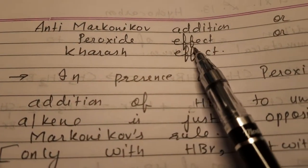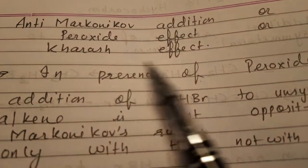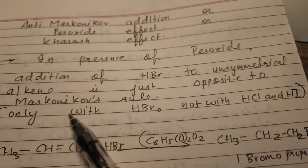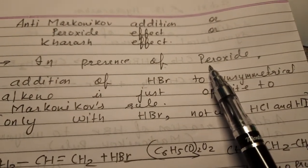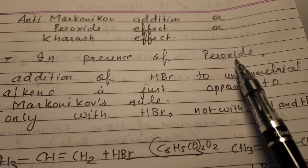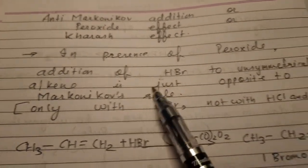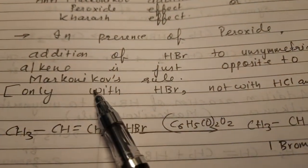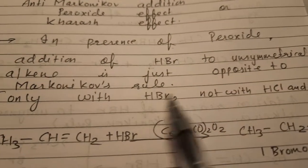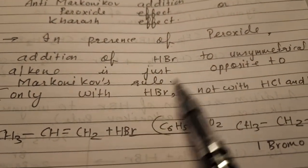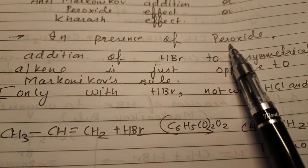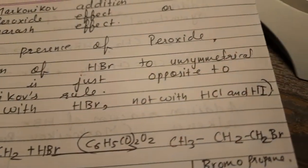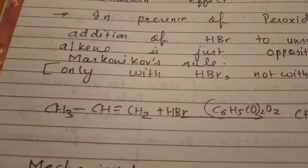This reaction occurs in the presence of peroxide. A peroxide has a single covalent bond between two oxygen atoms. The addition of HBr to an unsymmetrical alkene in the presence of peroxide gives the result opposite to Markovnikov's rule. Importantly, this peroxide effect applies only to HBr — not with HCl or HI.